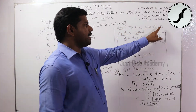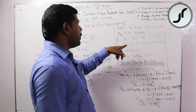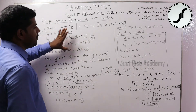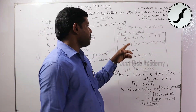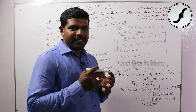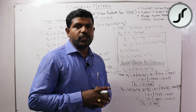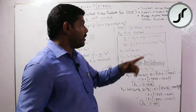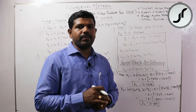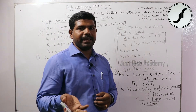Step 1: To find y(0.7), that is y1, by RK method. y_(n+1) equals y0 plus delta_y. So y1 equals y0 plus delta_y, where delta_y equals 1/6 into (k1 plus 2k2 plus 2k3 plus k4). k1 equals h into f(x0, y0). k2 equals h into f(x0 plus h/2, y0 plus k1/2).